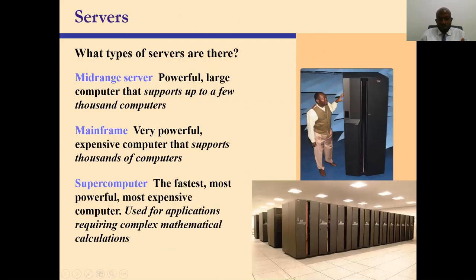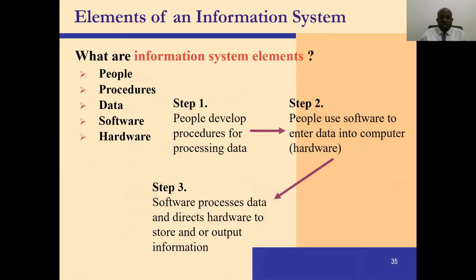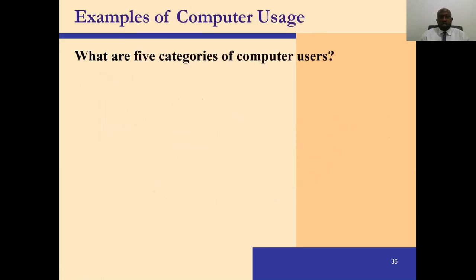We also have mid-range servers, mainframe computers, and supercomputers as further categories of computers. The complete information system consists of five elements: people, procedure, data, software, and hardware. These five things come together to make a complete computer system — the user, the procedures followed, the data, the software, and the hardware all work together to form the computer system.